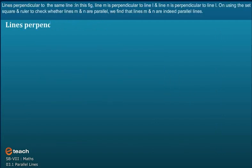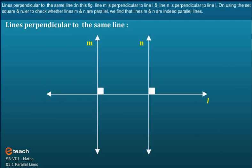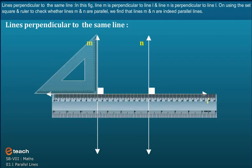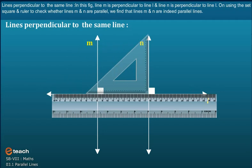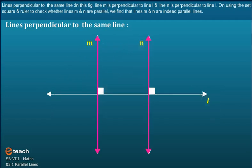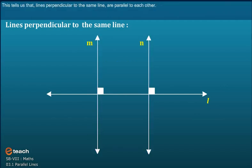Lines perpendicular to the same line: In this figure, line M is perpendicular to line L and line N is perpendicular to line L. On using the set square and the ruler to check whether line M and N are parallel, we find that line M and N are indeed parallel lines. This tells us that lines perpendicular to the same line are parallel to each other.